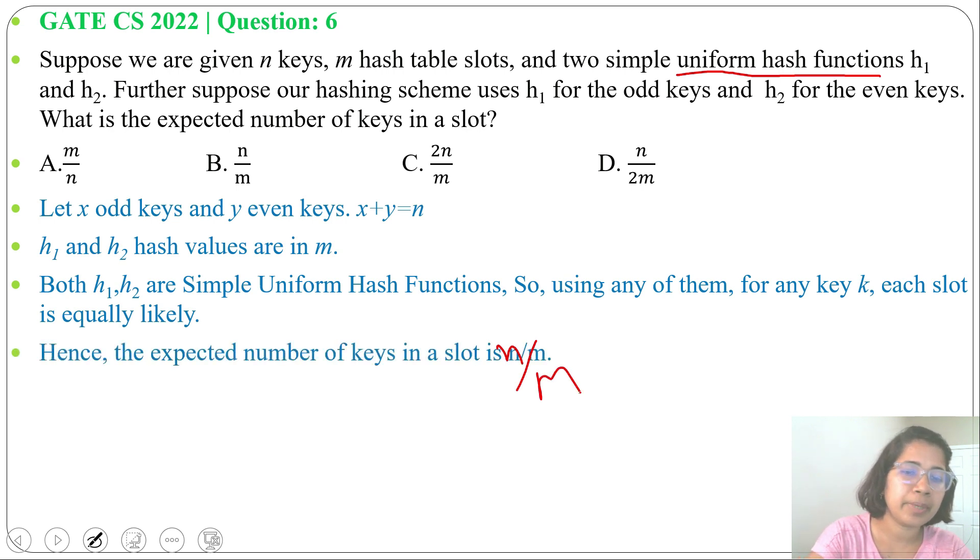be option B: n/m. In case of uniform hashing, every key has equal probability for every slot. We can distribute keys uniformly over the slots in the hash table. So that's why the expected number of keys in a slot